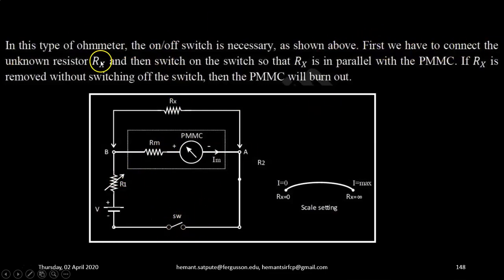First we have to connect the unknown resistance Rx, and then switch on the switch, so that Rx comes in parallel with the PMMC meter. If Rx is removed without switching off the switch, then PMMC will be burnout.